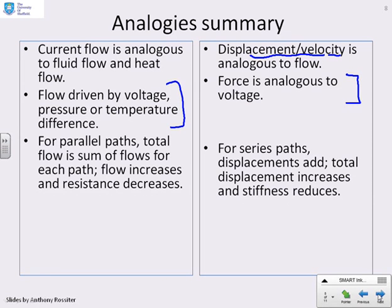For things like resistors, if you have parallel paths, the total flow is the sum of the flows for each path and the flow increases and the resistance decreases if you add parallel paths.